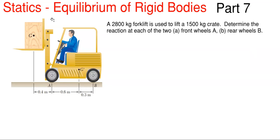What we have going on here is a forklift shown with dimensions. It says a 2800 kilogram forklift is used to lift a 1500 kilogram crate. Determine the reaction at each of the two front wheels A and at the two rear wheels B. So we have two parts here, A and B. But before we begin, we have to turn our kilogram units into kilonewton units.